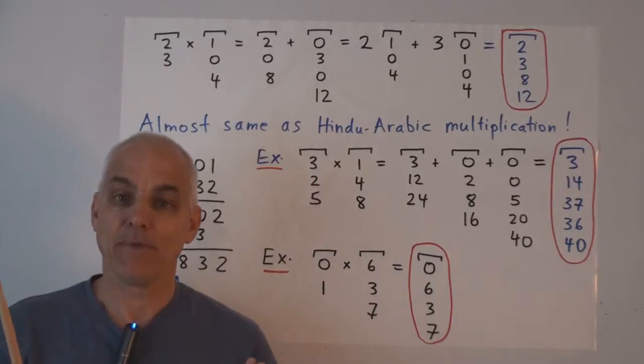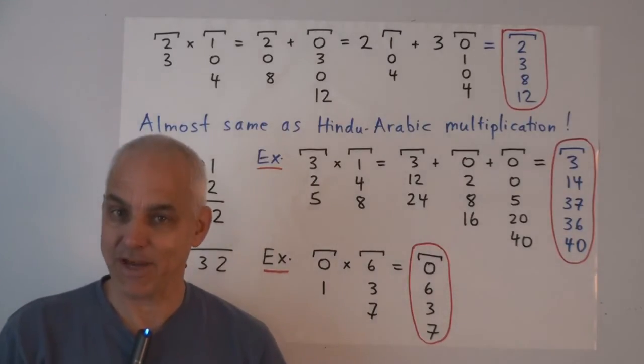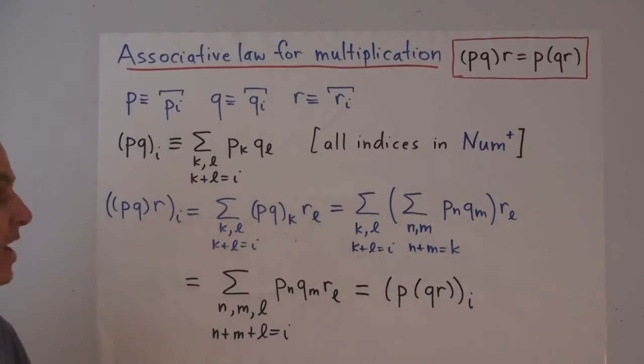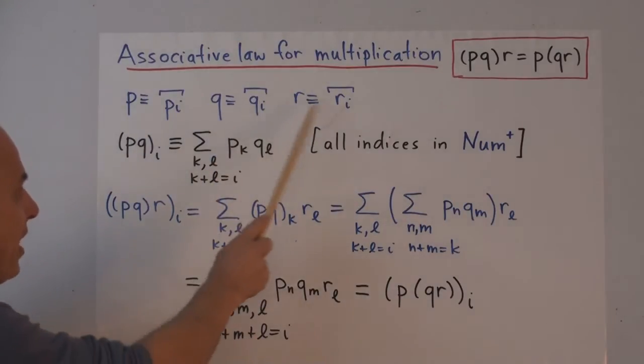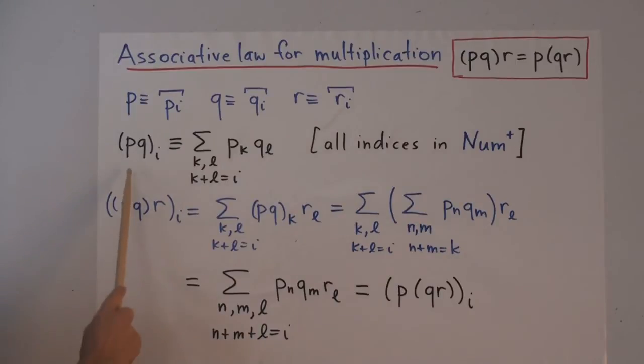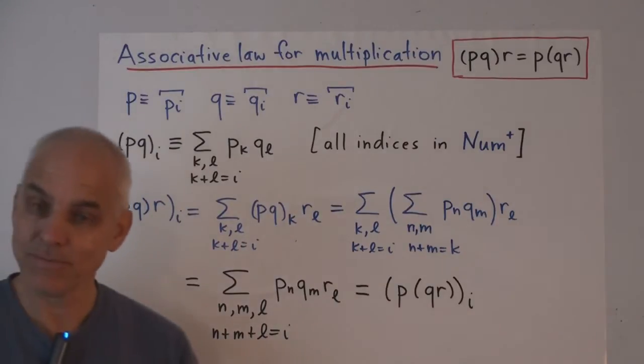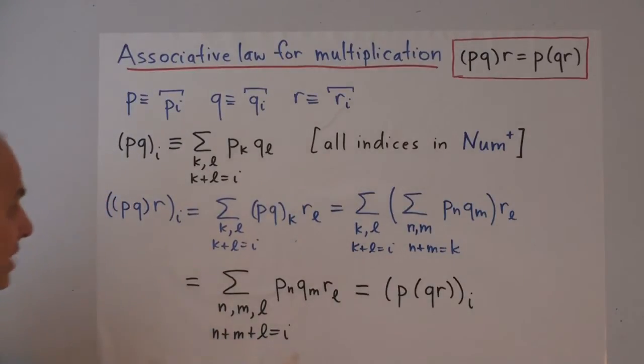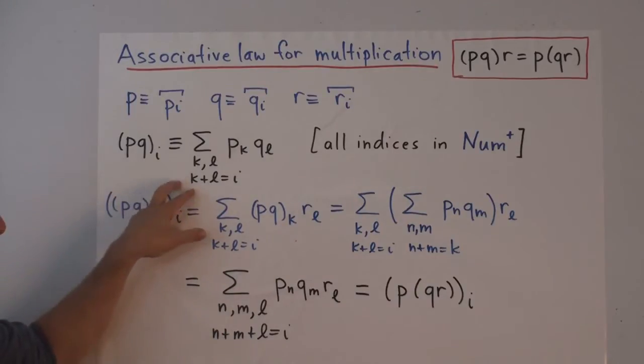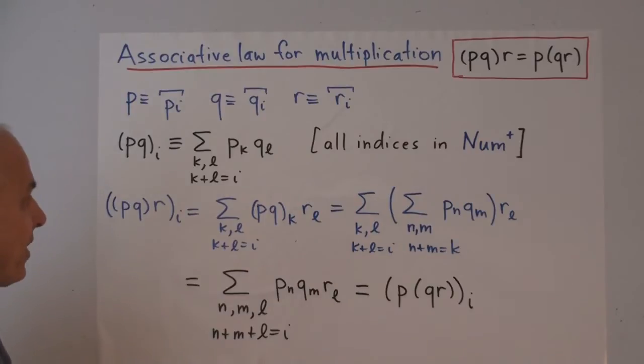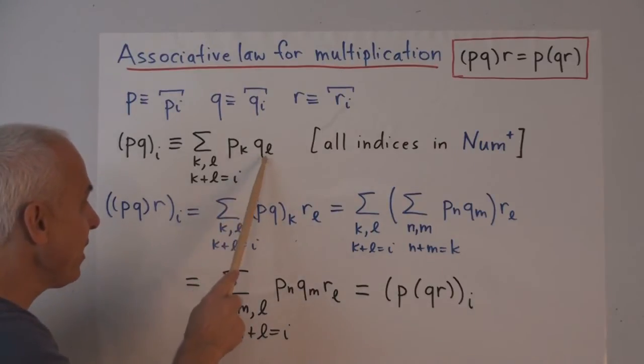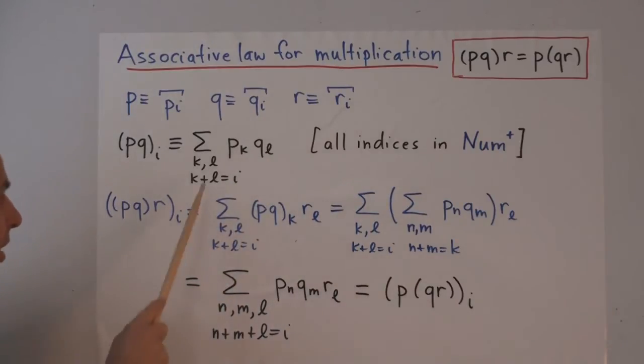Now let's talk about associativity of multiplication. So suppose we have three polynumbers P, Q, and R, with entries PI, QI, and RI. The product PQ is another polynumber whose I-th entry is given by this formula. The sum over all K's and L, positive numbers, of PK times QL, where K plus L sum to I.